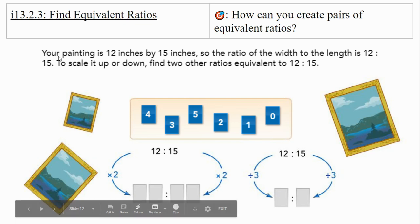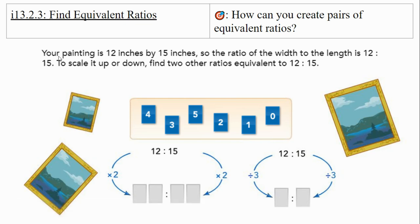You have a painting that's 12 inches by 15 inches. The ratio of width to length is 12 to 15. To scale it up or down, find two other ratios equivalent to 12 to 15. To scale up: 12 times two is 24, and 15 times two is 30, giving 24 to 30. To make it smaller using division: 12 divided by three is four, and 15 divided by three is five, giving four to five.